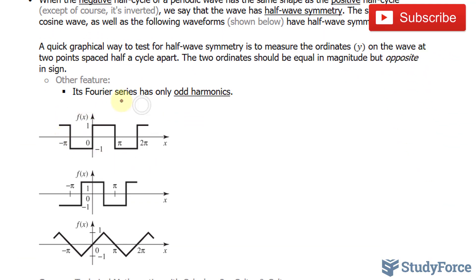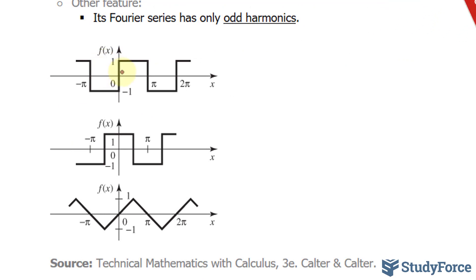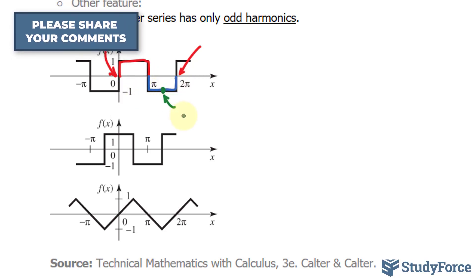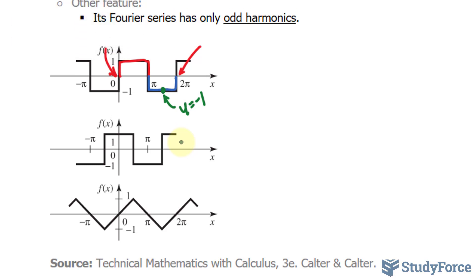Take, for example, the waveform shown here. Notice that the cycle begins here and ends over here. To test for half-wave symmetry, look at the negative part of the cycle — the blue portion. Select a point; its y-coordinate is negative 1. Half a cycle away, the y-coordinate is 1. Since 1 and negative 1 have the same magnitude but opposite signs, this waveform exhibits half-wave symmetry.